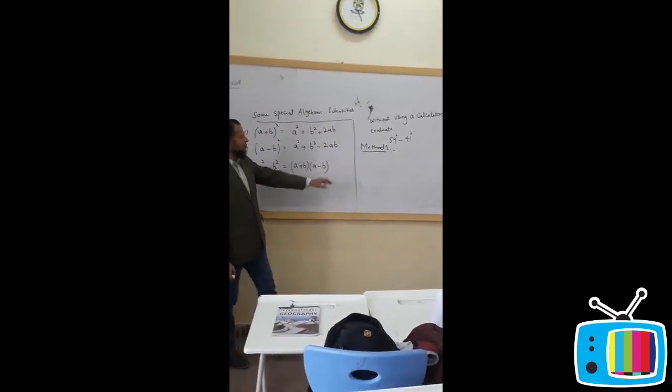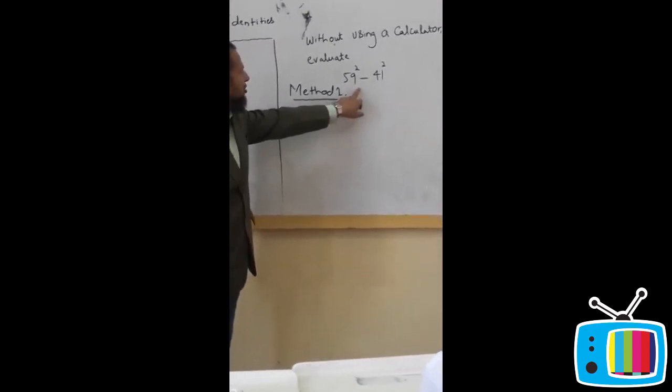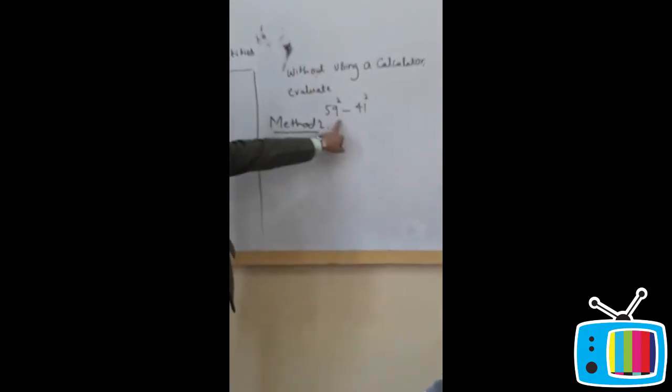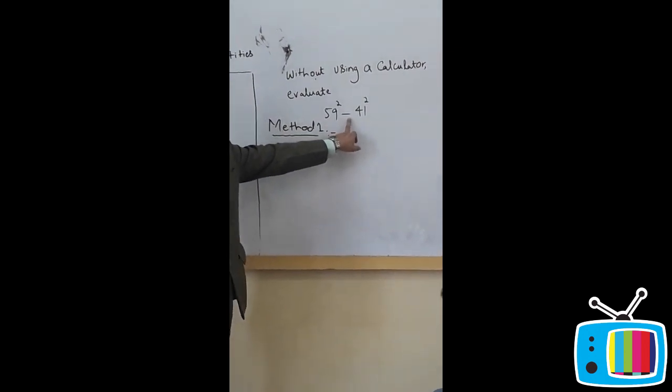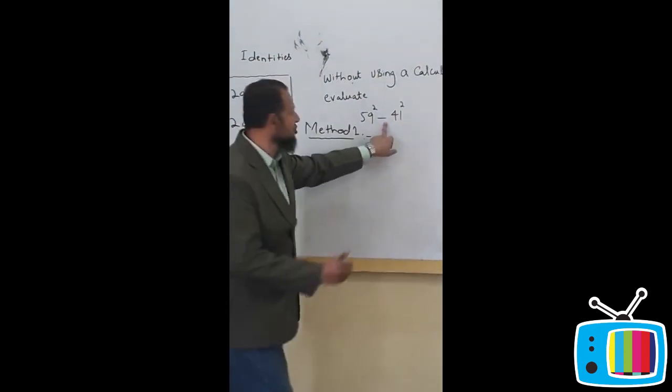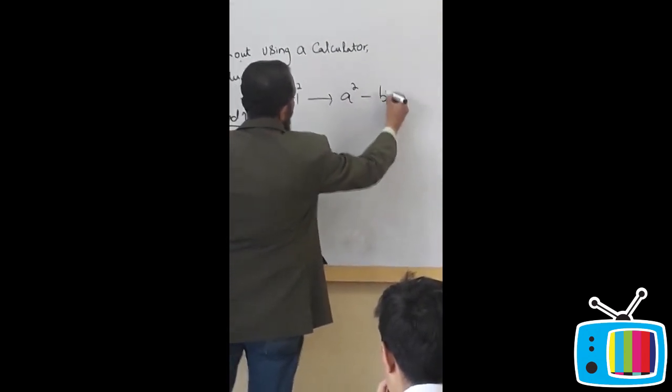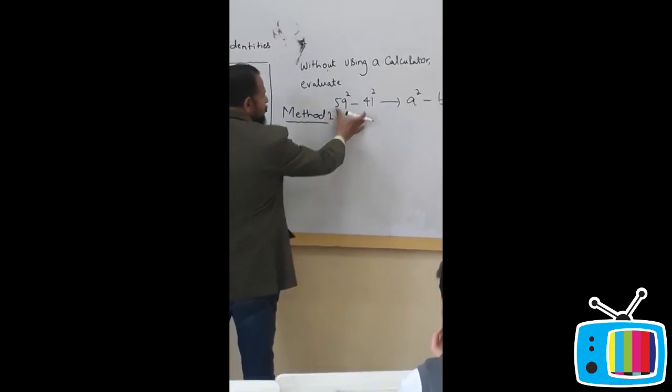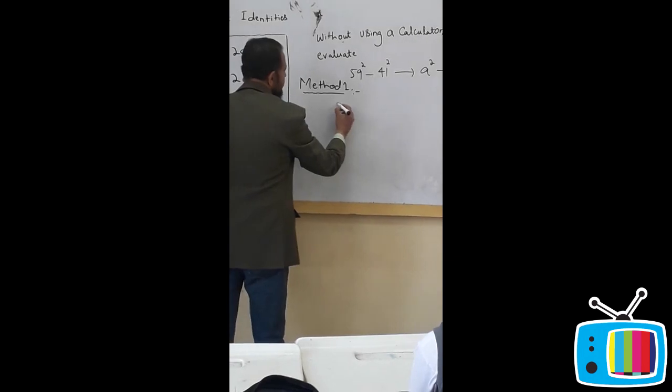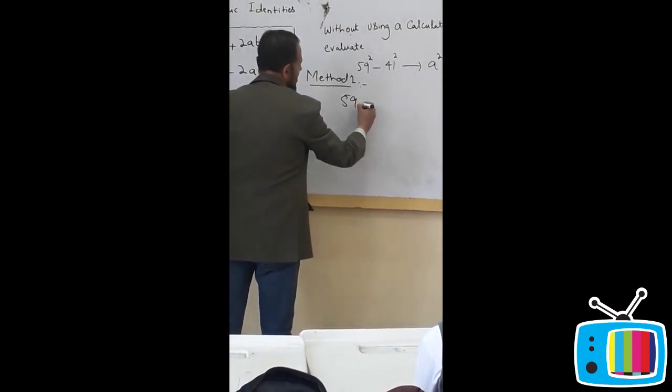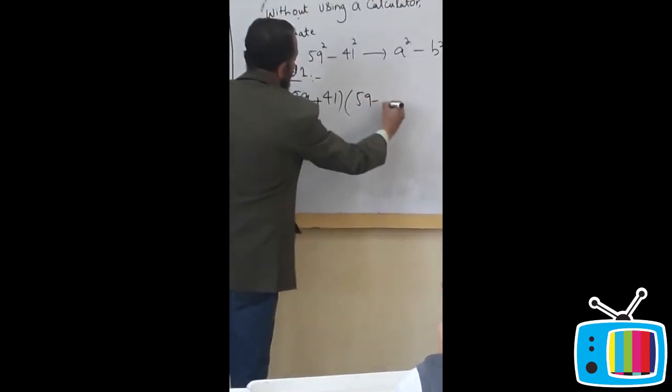If you look at these two numbers very closely, these two numbers are squared. And these two numbers not only squared, they are segregated by a negative sign. So, this is of the form a² minus b². So, if I wanted to apply the same identity on these numbers, what I'm going to do, I will simply write like 59 plus 41 and 59 minus 41.